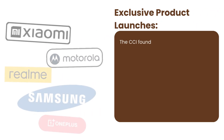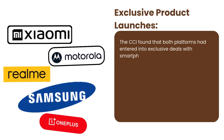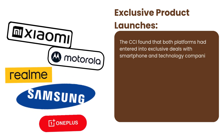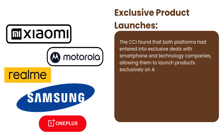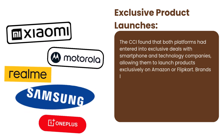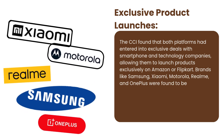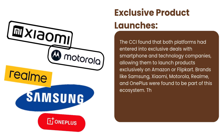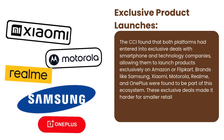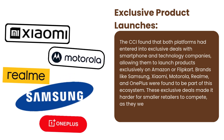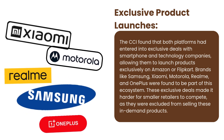Number three, exclusive product launches. The CCI found that both platforms had entered into exclusive deals with smartphone and technology companies, allowing them to launch products exclusively on Amazon or Flipkart. Brands like Samsung, Xiaomi, Motorola, Realme, and OnePlus were found to be part of this ecosystem. These exclusive deals made it harder for smaller retailers to compete, as they were excluded from selling these in-demand products.